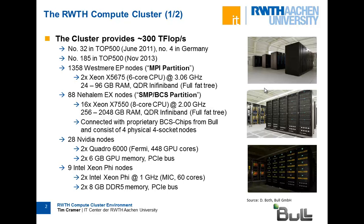We have nine Intel Xeon Phi nodes, and in each node we have 60 Intel Xeon Phi cores. As Christian mentioned, you can't compare these directly to the Westmere nodes because these are real x86 cores but they are slower due to limitations. Each of these Xeon Phi nodes has about 8 gigabytes of DDR5 memory — very fast memory — and a relatively high memory bandwidth.